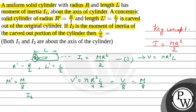For i2, the carved-out portion has mass m' = m/8 and radius r' = r/2, so r'² = r²/4. Therefore i2 = m' × r'² / 2 = (m/8) × (r²/4) × (1/2). Solving this, we get i2 = mr²/64.